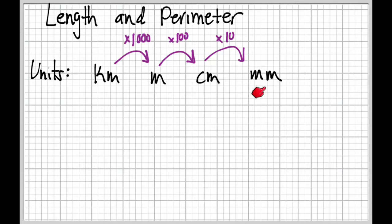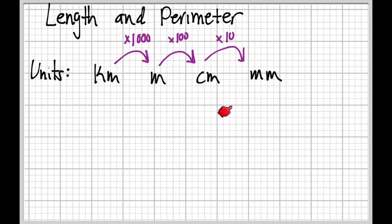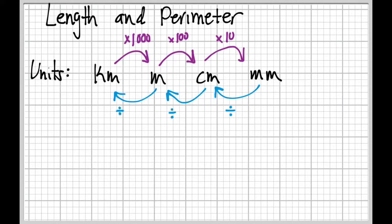Now we can go back. If we had something in millimeters and we wanted to put it in centimeters, we could go back that direction. And in order to do that, we just need to divide — the number's getting smaller. We're going to divide for each one of those going that direction, from centimeters to meters and so on. And we divide by the exact same numbers that we would have multiplied by going in the other direction.